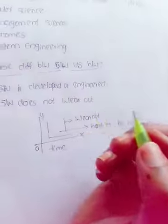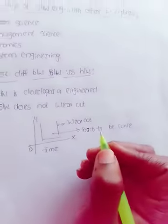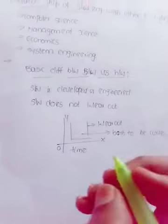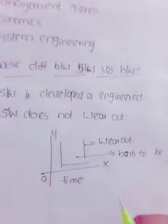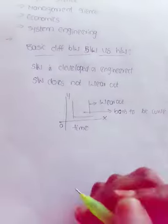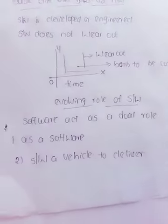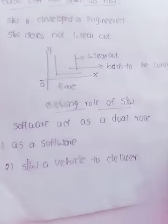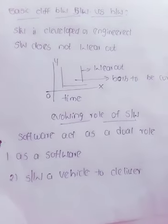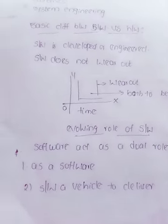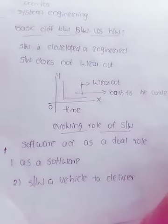Evolving role of software: software acts as a dual role. First, as a software or application. Second, software as a vehicle to deliver the product. Software is a collection of programs, and operating system is also a component of software engineering. Operating system is a key system software component.